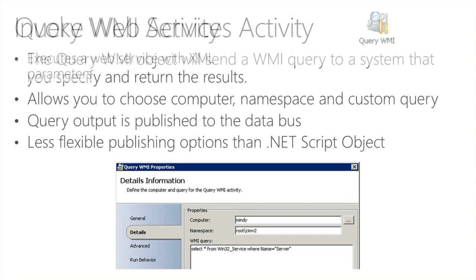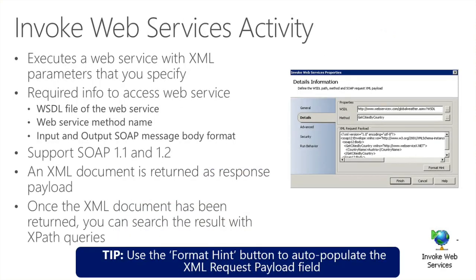The next one is how to work with web services. There is one activity called Invoke Web Service, which runs a web service and gives you options to define XML parameters, returning the result as XML. In the screenshot on the right, you see you have to define the WSDL file — the description file of the web service. You define the WSDL URL in the first text box. There are many free web services available online for testing.